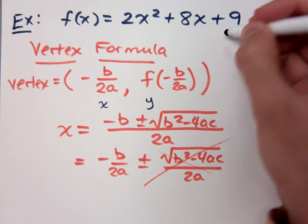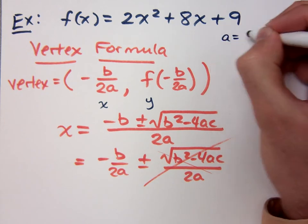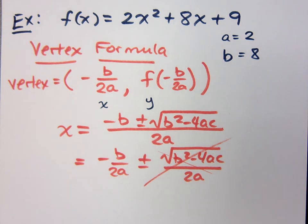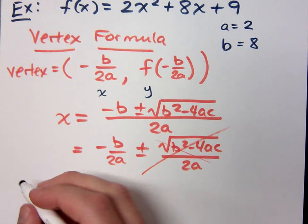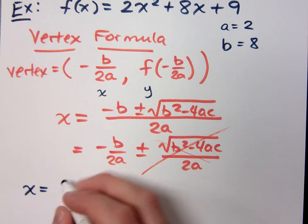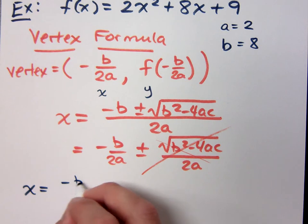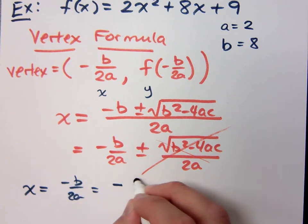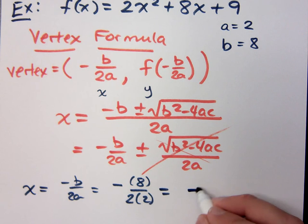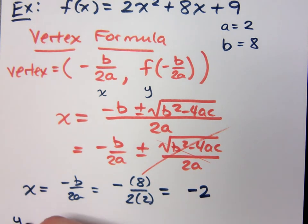So if I look at the example that I have up here, what is a? What is b? So that means if I'm doing my vertex formula, the x part is negative b over 2a. So it means negative 8 over 2 times a, which is 2. What does all that give you? It gives me negative 2. How do I find my y? I figure out what is f of negative 2.